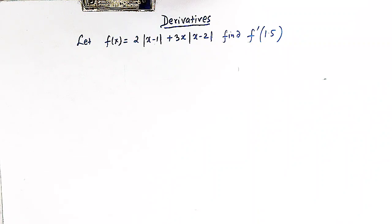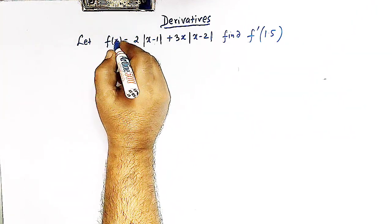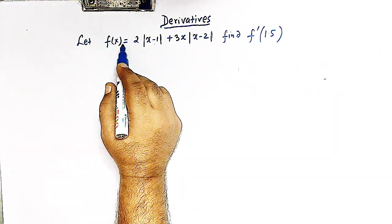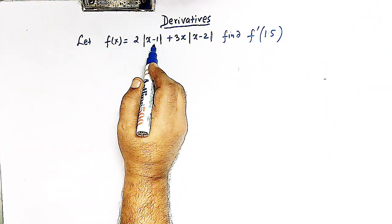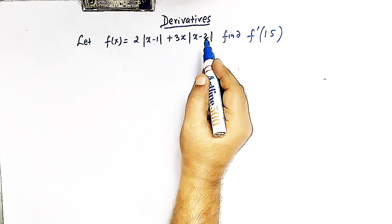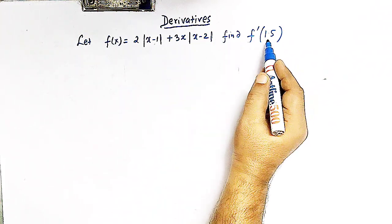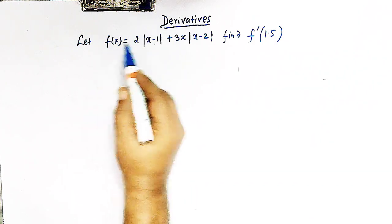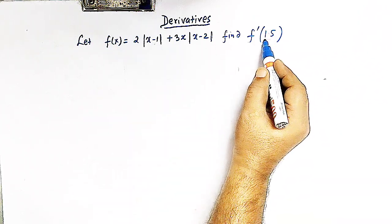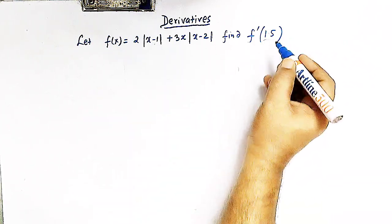Hello viewers. In today's session, we are going to discuss another important and conceptual problem from derivatives. We are given a function f(x) which is equal to 2 times mod of x minus 1, plus 3x mod of x minus 2, and we have to find the derivative of this function f(x) at the point 1.5.